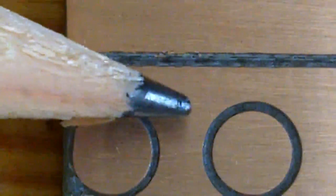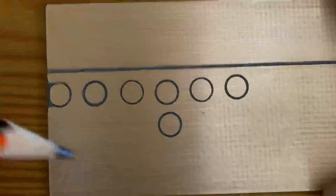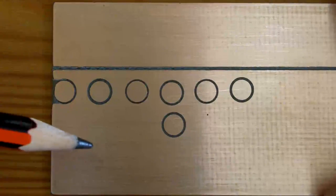So those are the pads for the devices and then this is going to be my negative rail and this is going to be my positive rail.